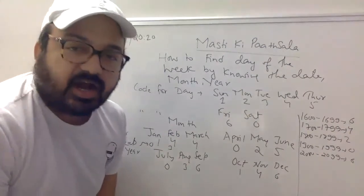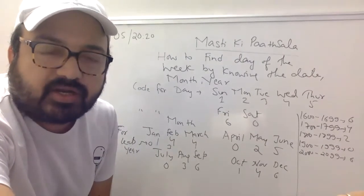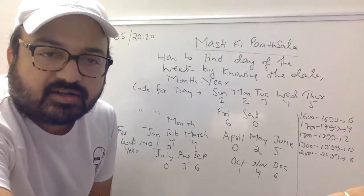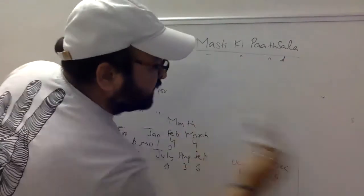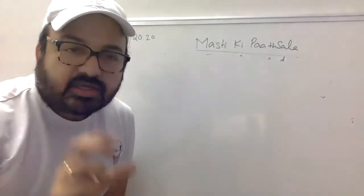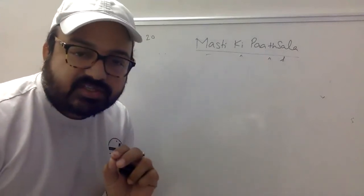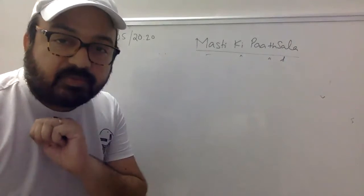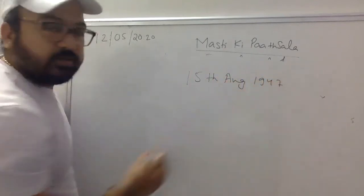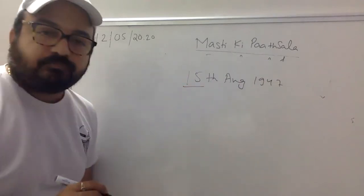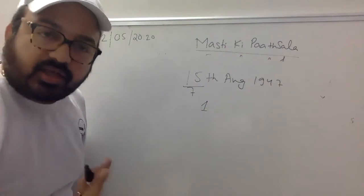इस knowledge से आप किसी भी तारीख का day बता देंगे। हम start करते हैं सबसे important तारीख — हमारे देश का 15 August 1947, कौन सा दिन था? Date से start करते हैं: 15 को 7 से divide करो, remainder को focus करो — remainder है 1. तारीख का code आ गया: 1.